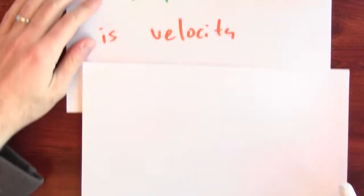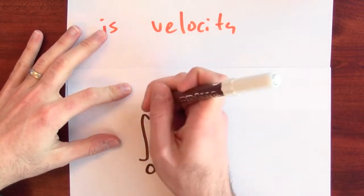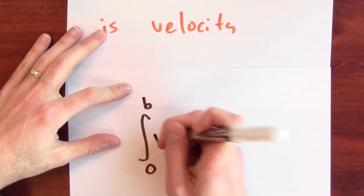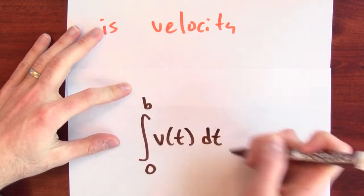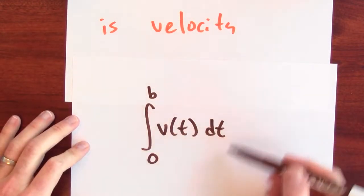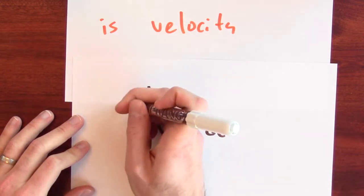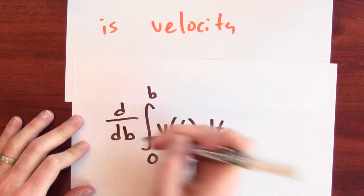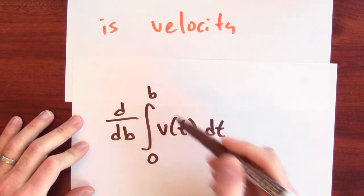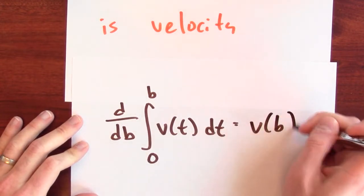Or in symbols, the accumulation function, which calculates my displacement, is the integral from 0 to b of my velocity. And what I'm asking is how is that changing? If that's my displacement when I travel from time 0 to time b, what is the derivative with respect to the time that I've been traveling? The derivative of displacement is velocity.